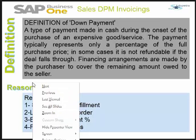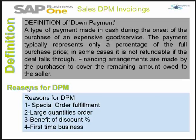Now, reasons for the down payment can be: special order fulfillment, large quantities order, benefit of discount percentage, or first-time business. There can be a product that the customer orders which the manufacturer does not make regularly, so the manufacturer, to be on the safer side, would ask the customer to pay some percentage of the document total so that the special order fulfillment can be done. For large quantity orders, the manufacturer may ask for a down payment to make sure the deal does not get cancelled.